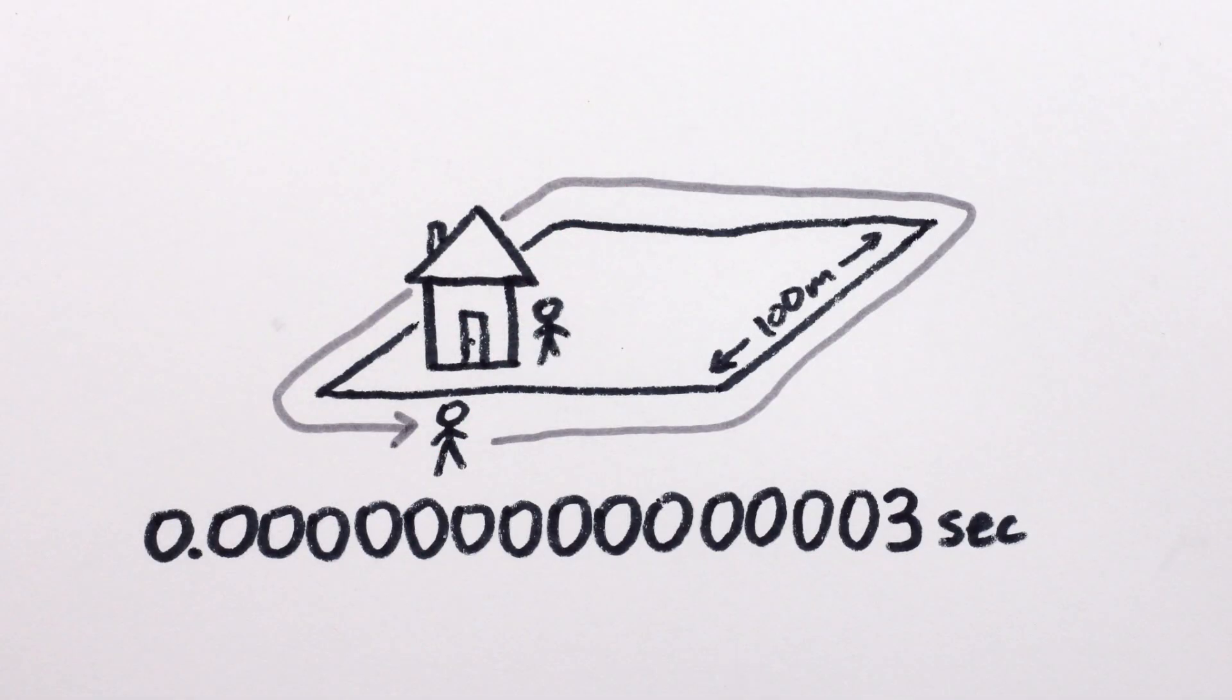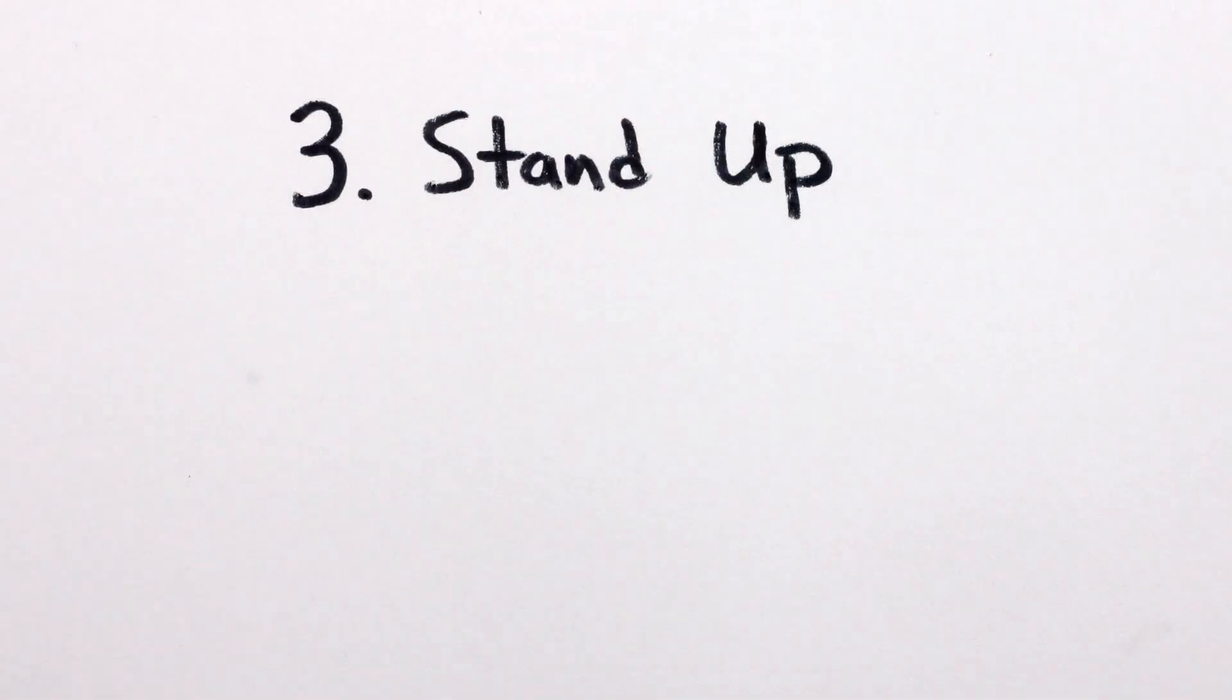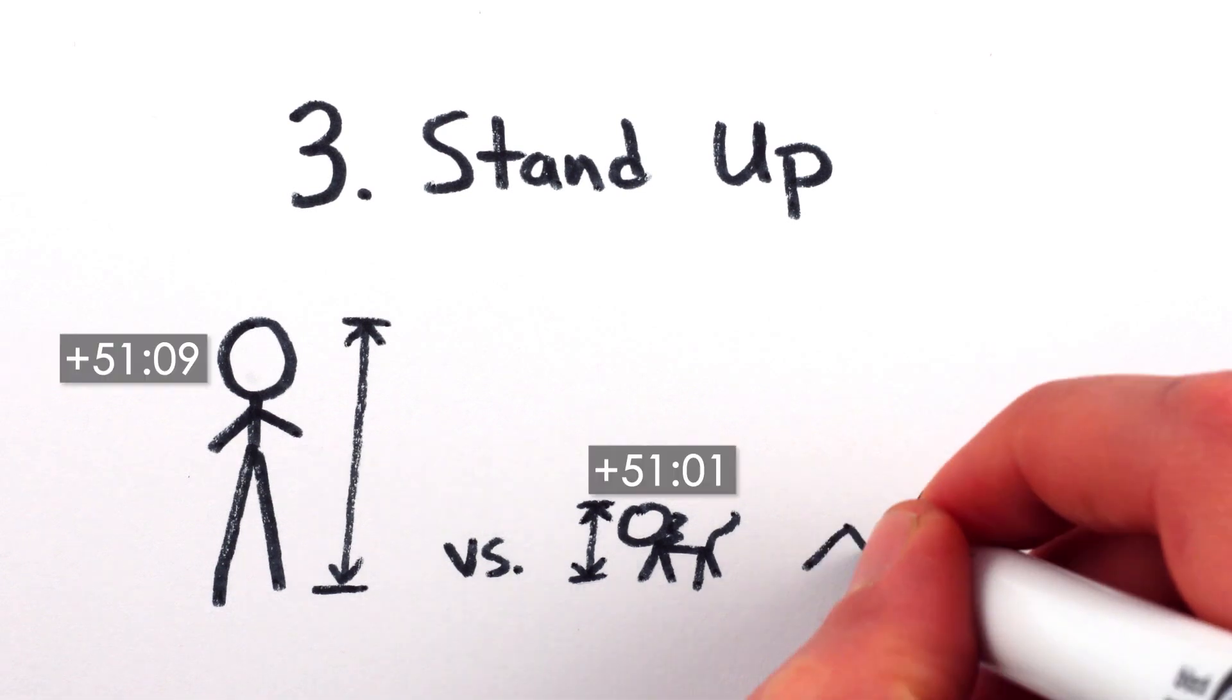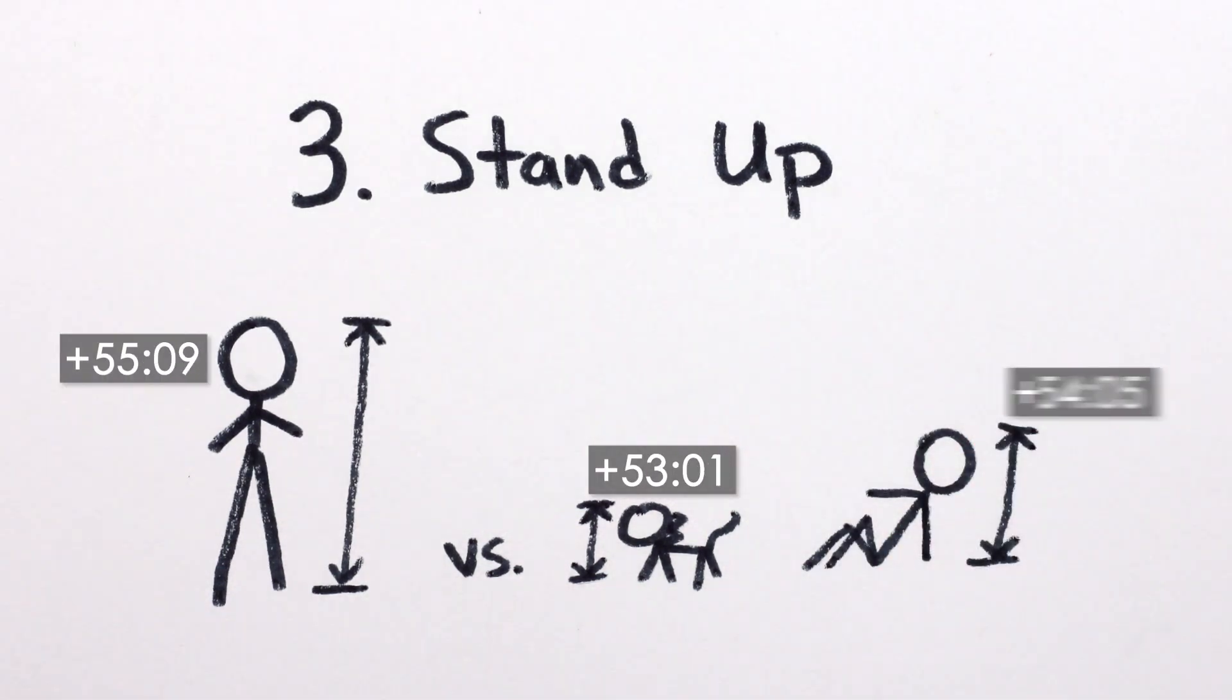Except, in order to walk around the block, you had to stand up. You're now further from the earth, and so gravity is a tiny bit weaker for you, which means you're traveling through time relative to your friend who's sitting down.